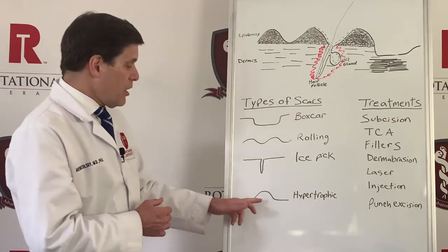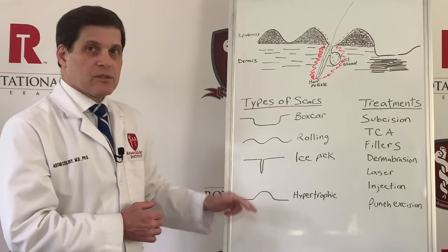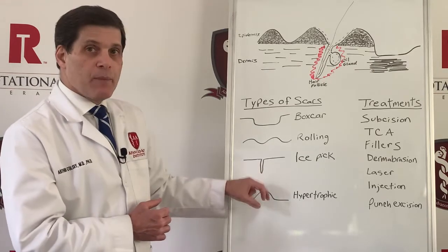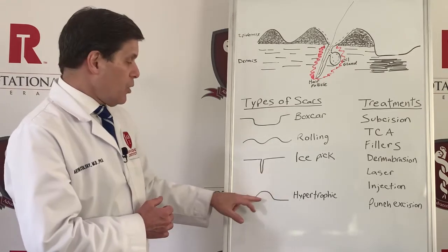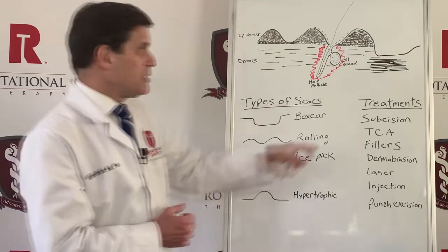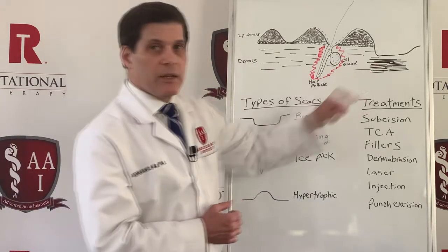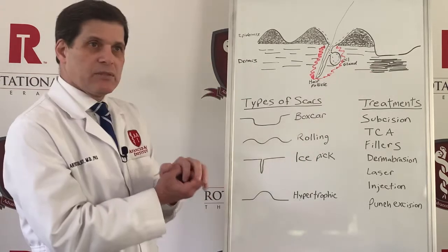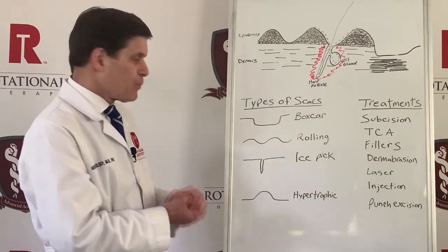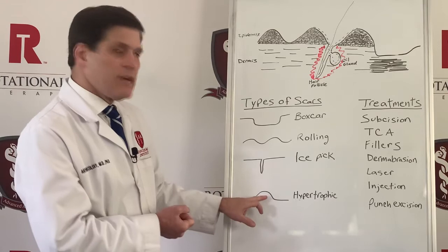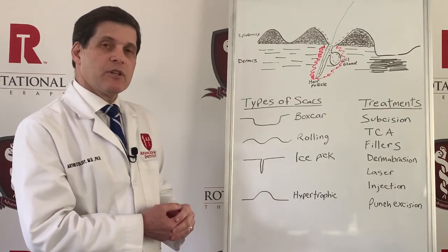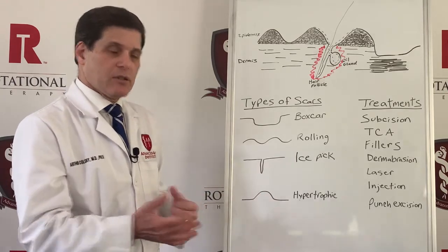Then you have hypertrophic scars, which are raised scars — they form a bump on the skin filled with bundles of thick collagen, similar to what's shown here. When they get very big, sometimes we refer to them as keloid scars.